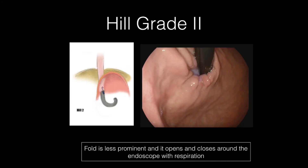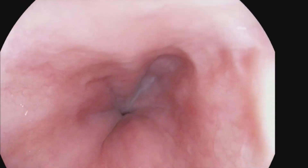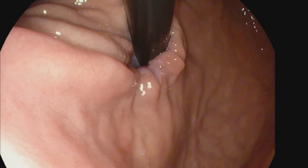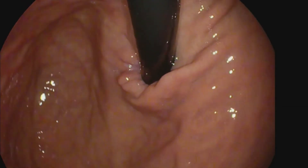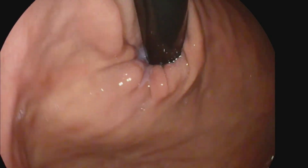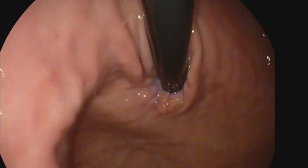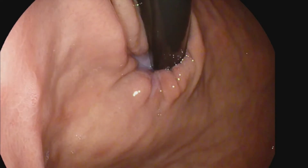With a Hill-grade 2 valve, the fold of tissue is less prominent and there are occasional periods of opening and rapid closing around the endoscope with respiration. In a Hill-grade 2, we notice the valve gaps off of the scope intermittently and often with respiration, but still grabs the scope for a significant period of time. The folded flap flattens intermittently as well.